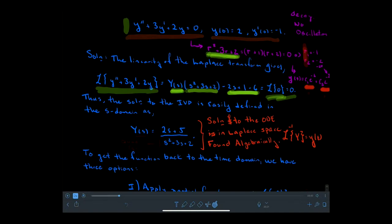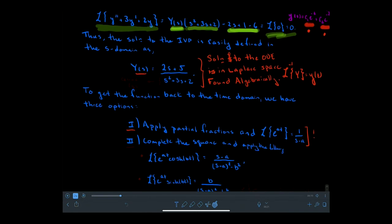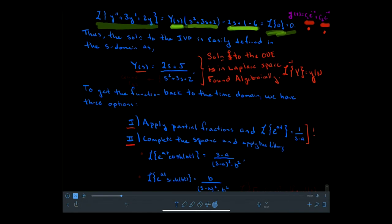To perform this, we really have three options. Option one: apply partial fractions to Y of S, searching for exponential-like terms in Laplace space — specifically things like 1 over S minus A. Option two: complete the square in the denominator, which is always a quadratic. If we do that, we would find the hyperbolic versions of the exponential functions, so we must be alert for those sorts of things.